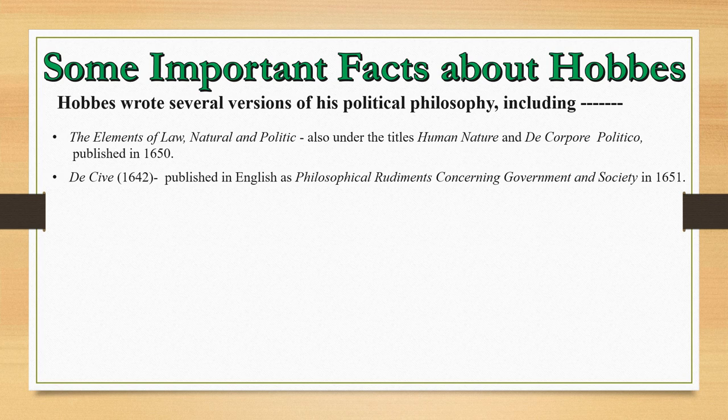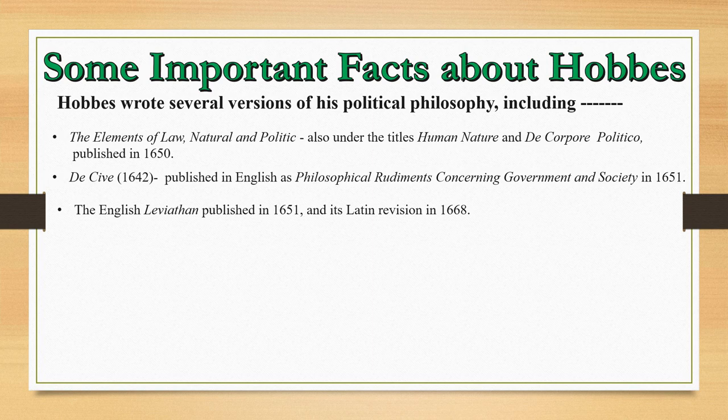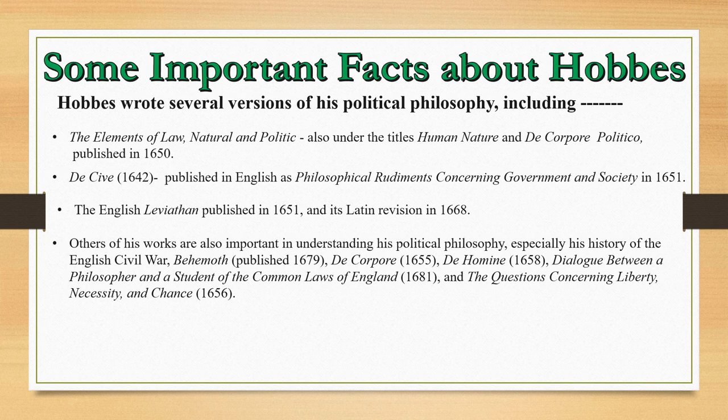De Cive, originally published in 1642, was published in English as Philosophical Rudiments Concerning Government and Society in 1651. The English Leviathan was published in 1651 and its Latin revision in 1668. Other important works include the History of the English Civil War — Behemoth — published in 1679; De Corpore 1655; De Homine 1658; Dialogue between a Philosopher and a Student of the Common Laws of England 1681; and the Questions Concerning Liberty, Necessity and Chance 1656.